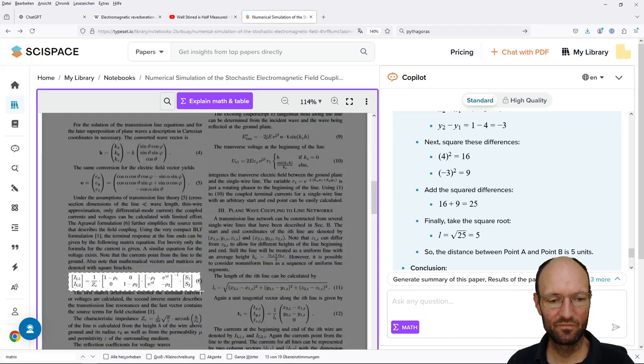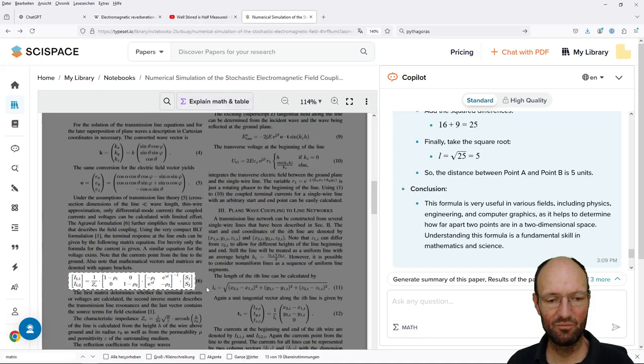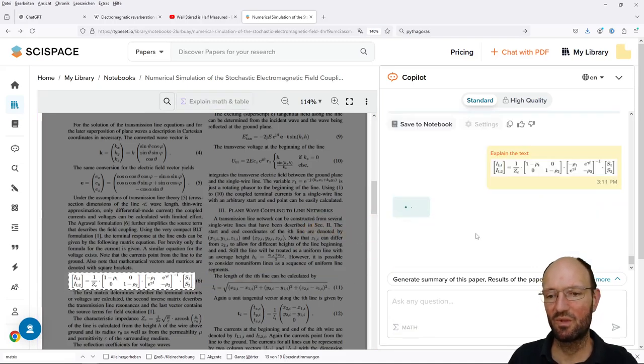This is the BAT equation that is used to calculate the current at the terminus of a transmission line. The Zc in this case is the characteristic impedance.